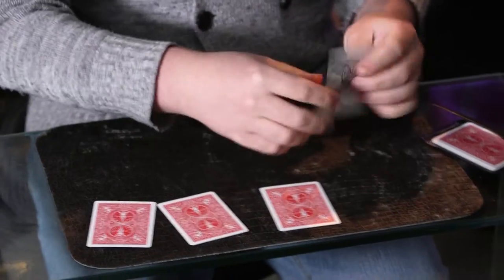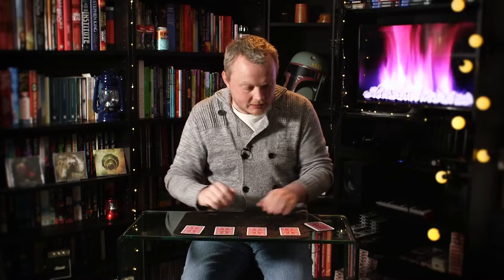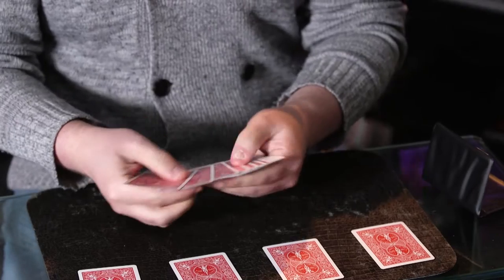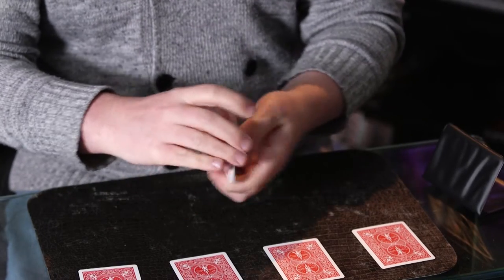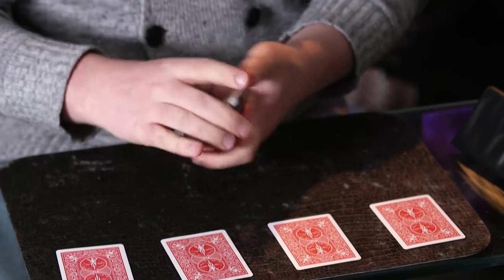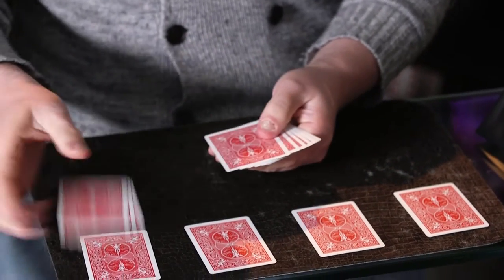So we're going to lay the jokers out in a line just like this and then I've got some really interesting cards to put on top of them. It looks like they're the same as the others but if you check them out they've actually got no faces at all. They are blank cards and it just keeps everything super clear and easy to follow.